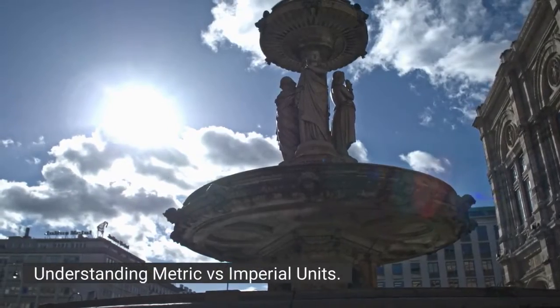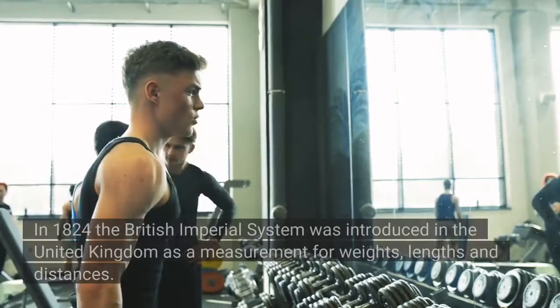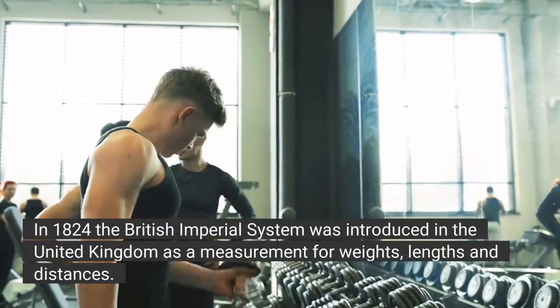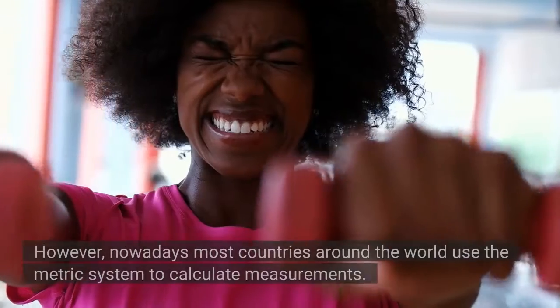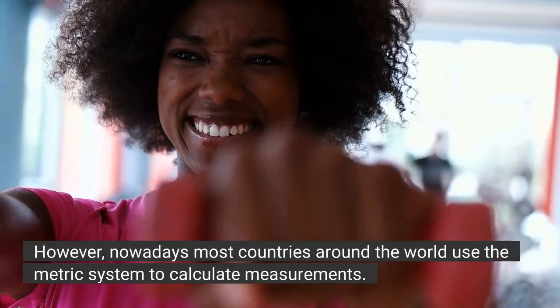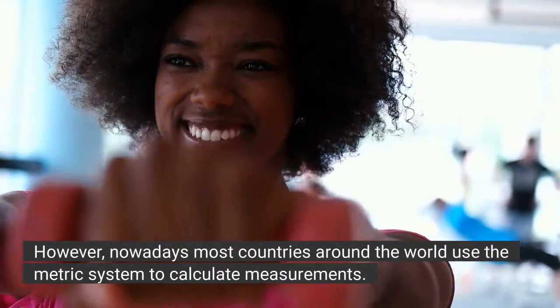Understanding metric versus imperial units. In 1824 the British imperial system was introduced in the United Kingdom as a measurement for weights, lengths and distances. However, nowadays most countries around the world use the metric system to calculate measurements.